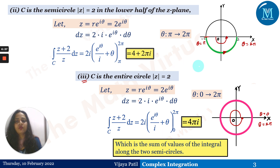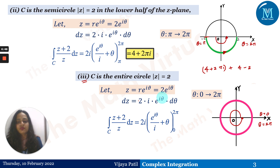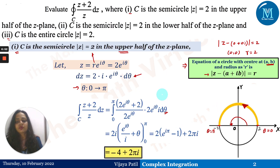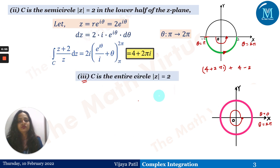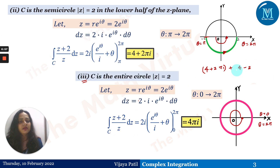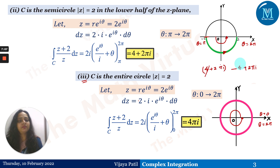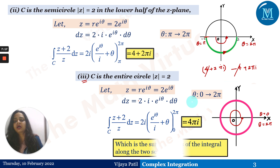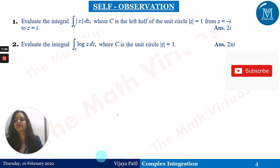Notice that 4πi is exactly the sum of the integrals along the two semicircles: the upper semicircle gave −4+2πi and the lower semicircle gave 4+2πi. Adding these: (−4+2πi) + (4+2πi) = 4πi, which confirms our result for the full circle.